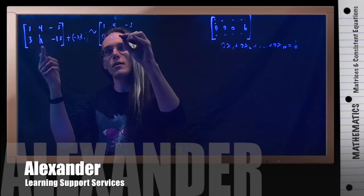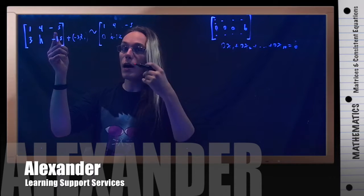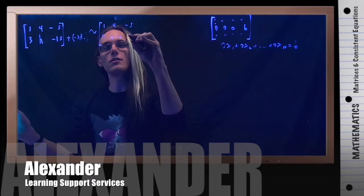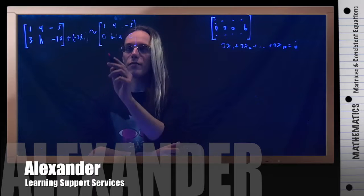And then negative 3 times negative 5 would be a positive 15. When I add that to negative 15, I get 0. Okay. So look at what I have here in this bottom row.